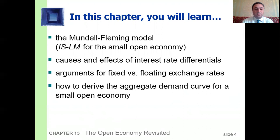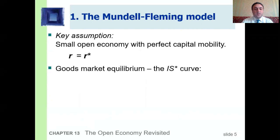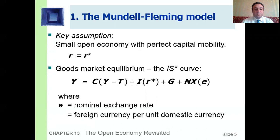The assumptions of the Mundell-Fleming model: small open economy with perfect capital mobility. We now have the world interest rate rather than a domestic interest rate. The goods market equilibrium is denoted by the IS curve, or the world IS curve. The nominal exchange rate E is defined as the foreign currency per unit of domestic currency.